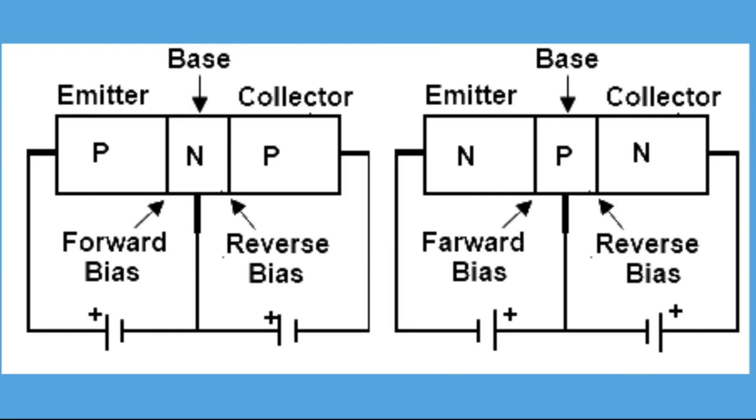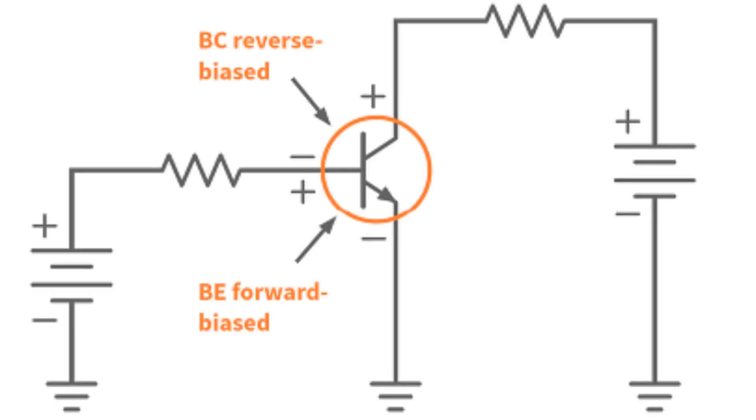In bipolar junction transistors, the current enters the transistor through the emitter such that the emitter base junction is forward biased and the collector base junction is reverse biased.